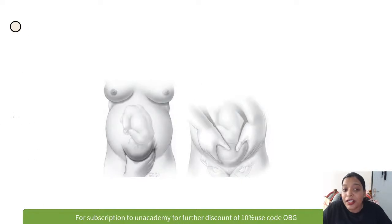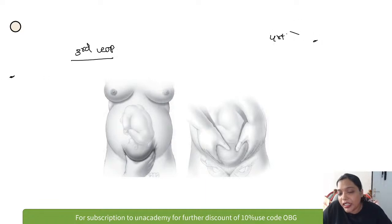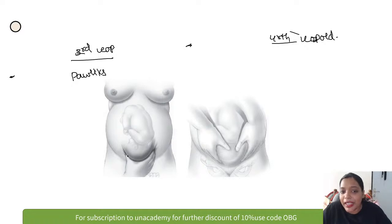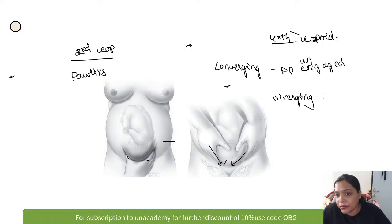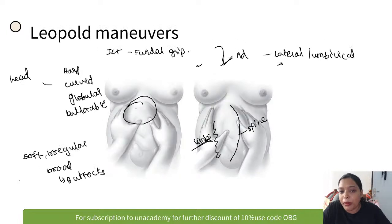The first three maneuvers are performed while facing the patient's face; the fourth is done while facing the patient's feet. The third maneuver — the Pawlik's grip — tells whether the presenting part is engaged or not. In the fourth maneuver, if hands are converging, the presenting part is unengaged; if hands are diverging, the presenting part is engaged.